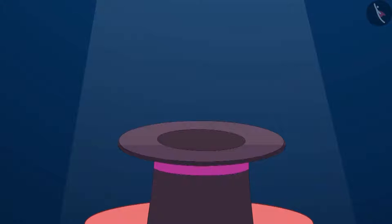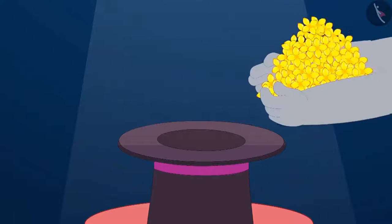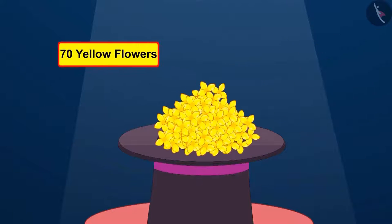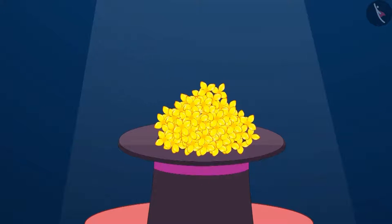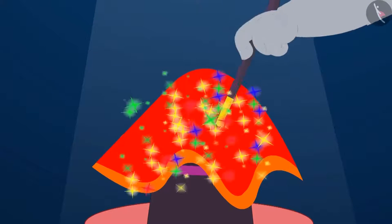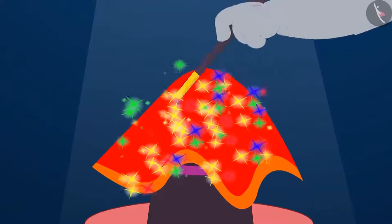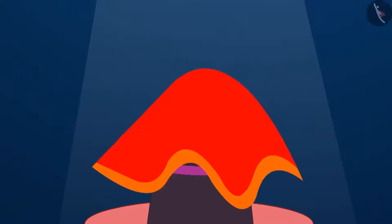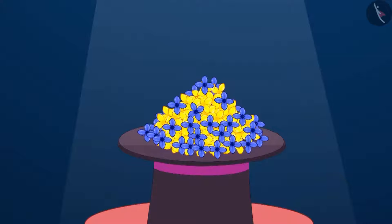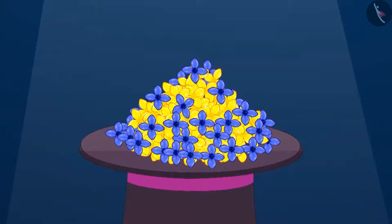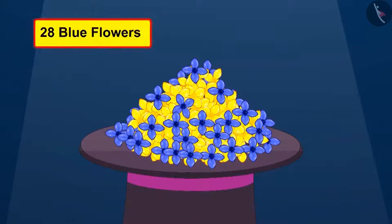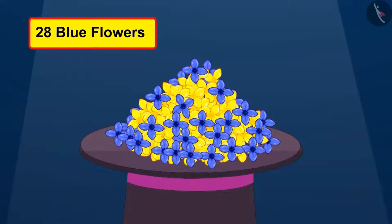He has kept in a flower vase 70 yellow flowers. Then he covered the vase with a cloth and swung his magic wand over it. When Gaggu removed the cloth from over the vase, along with 70 yellow flowers, there were 28 blue flowers too.